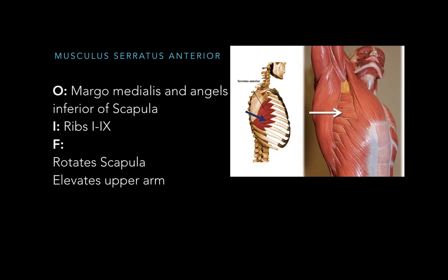The next one is musculus serratus anterior. It originates at the medial margin of the scapula and angulus inferior of the scapula. It goes under the scapula on the external surface and sits there, and it inserts at the ribs number one to nine. When this muscle contracts, it rotates the scapula anteriorly, as you see in this arrow, and that movement lifts your arm upwards. This muscle is mostly expressed when you lift your arm, just like this figure.